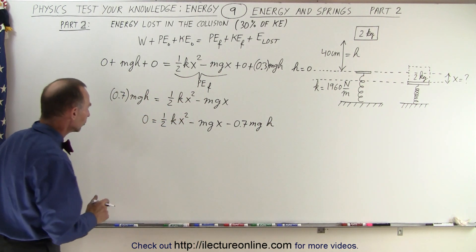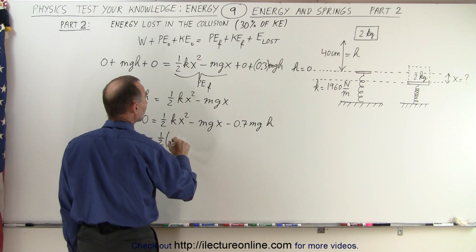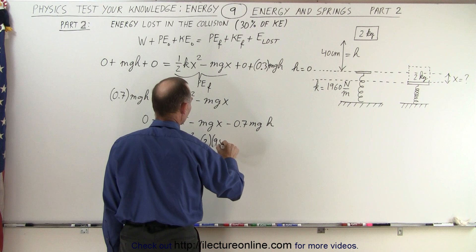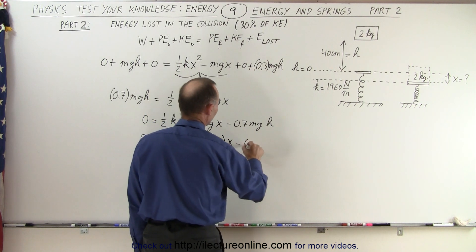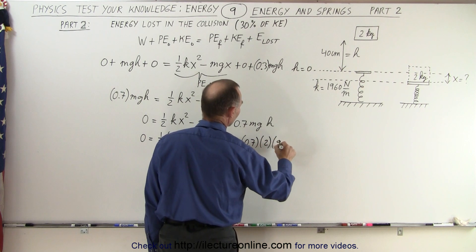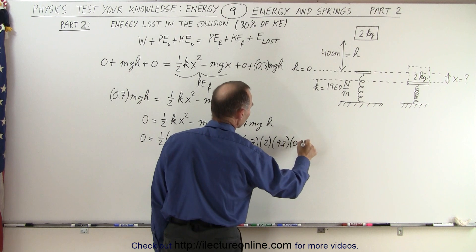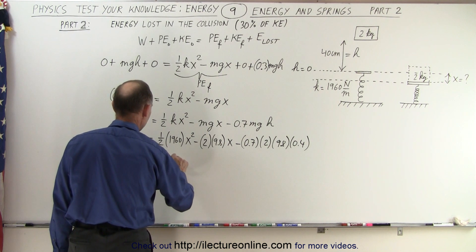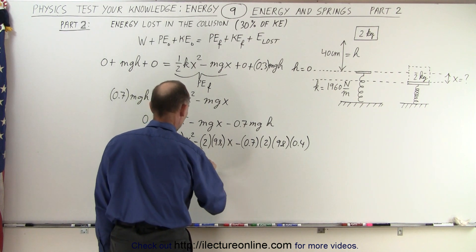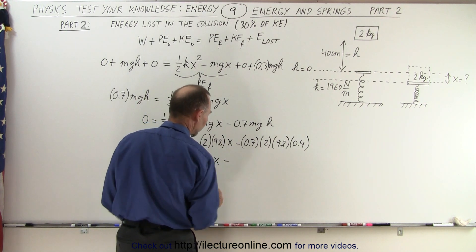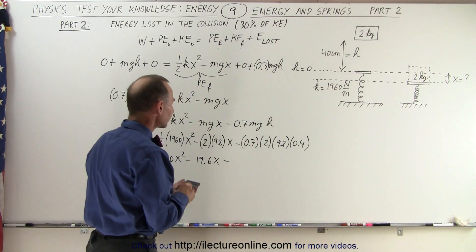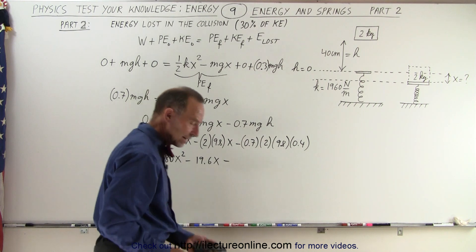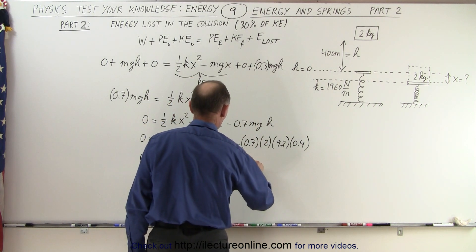Now we'll plug in the values. Zero equals one-half times k, which is 1960, times x², minus M, which is 2, times G, which is 9.8, times x, minus 0.7 times M times G times H, where H is 0.4. Working out those numbers: zero equals 980x² minus 19.6x minus 5.488, since 0.7 times 2 times 9.8 times 0.4 equals 5.488.